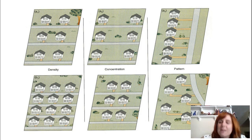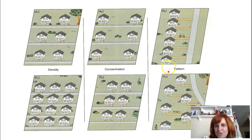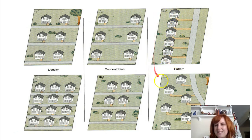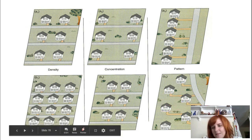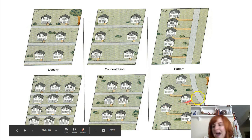Over here on pattern: we have these six houses in a straight line — that's one pattern. And then this one kind of goes in a zigzag. So we would say these houses are arranged in a zigzag pattern along the street.